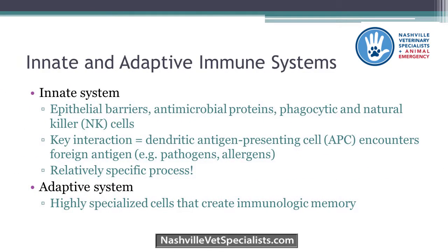The innate immune system includes things like epithelial barriers, mucous membranes, antimicrobial proteins — which I think will be a big push for shampoos in the future from companies like Virbac to avoid systemic antibiotics — as well as phagocytic and natural killer cells. The key interaction for the innate immune system in autoimmunity is the dendritic antigen-presenting cell encountering a foreign antigen — usually a pathogen, but sometimes an allergen or even an autoantigen.